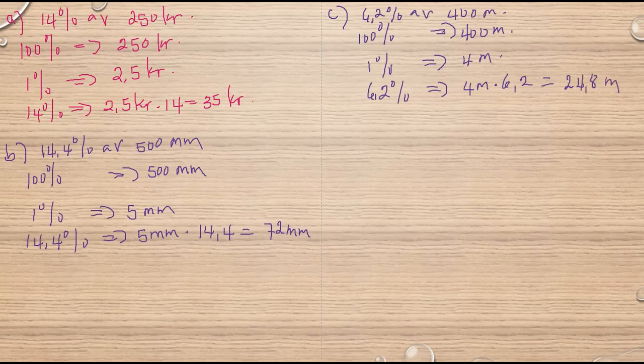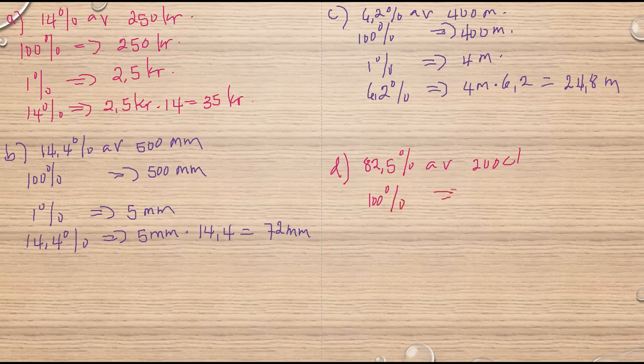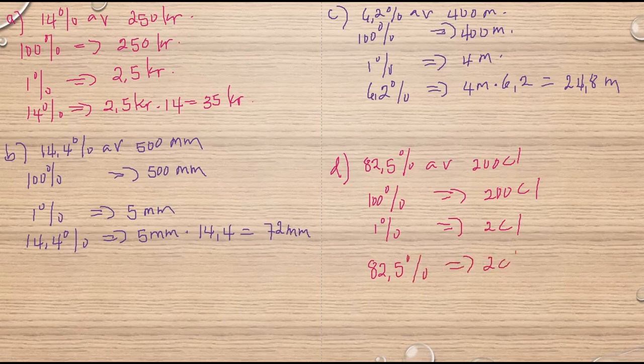Titta på D. 82.5% av 200 centiliter. Det är jätteviktigt med enheten som sagt. 100% motsvarar 200 centiliter. 1% motsvarar 2 centiliter. Så 82.5% motsvarar 2 centiliter multiplisar med 82.5. Då har vi 82.5 multiplisar med 2, 165 centiliter.